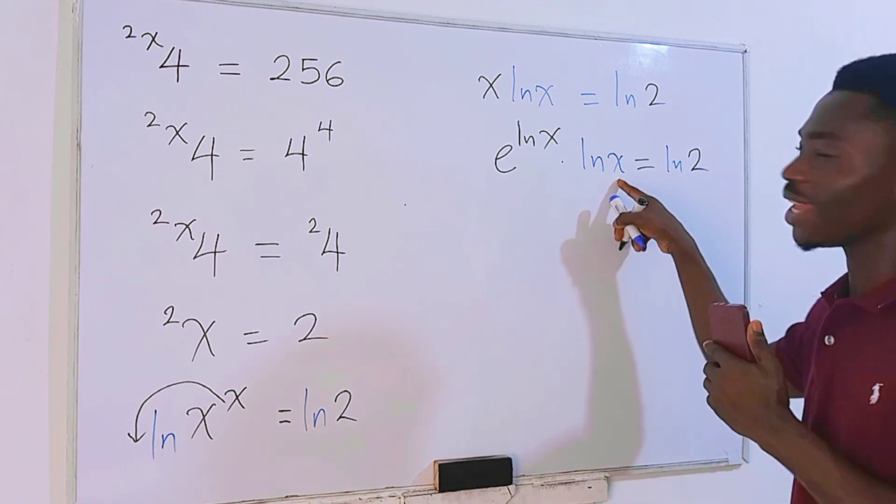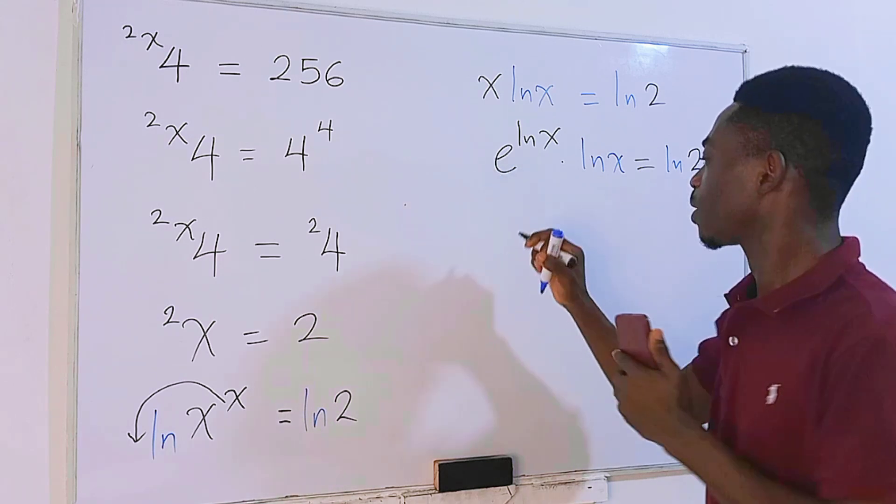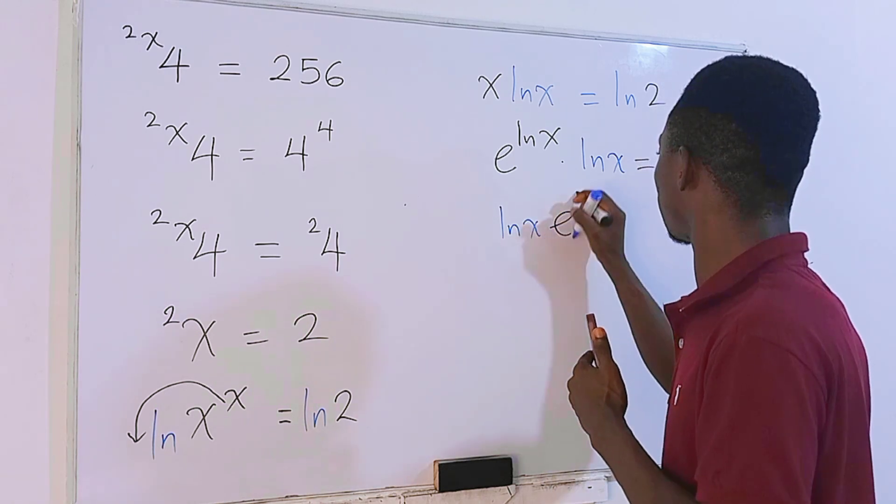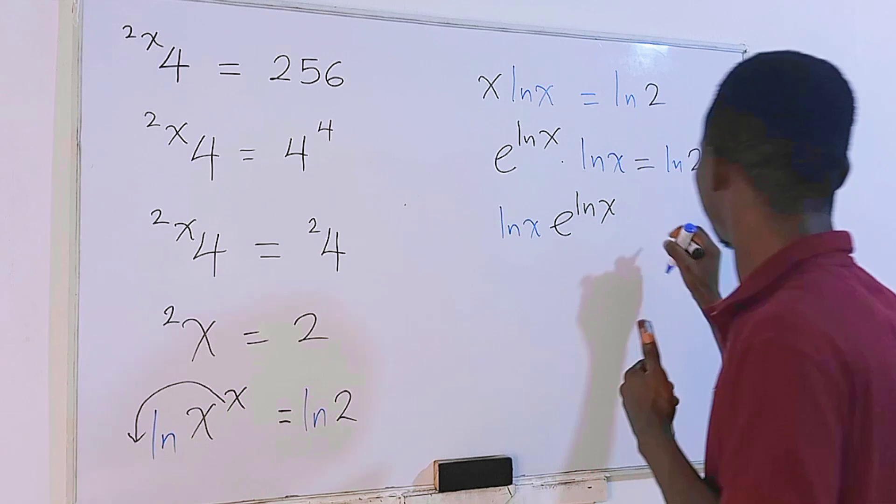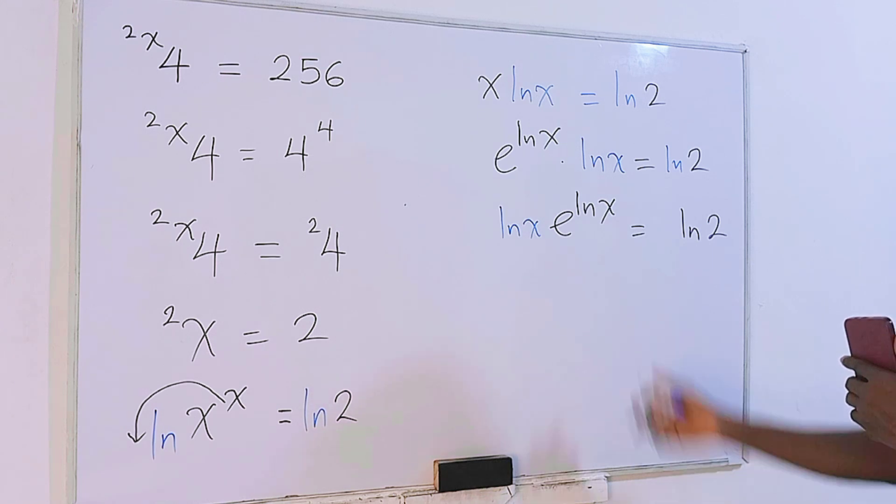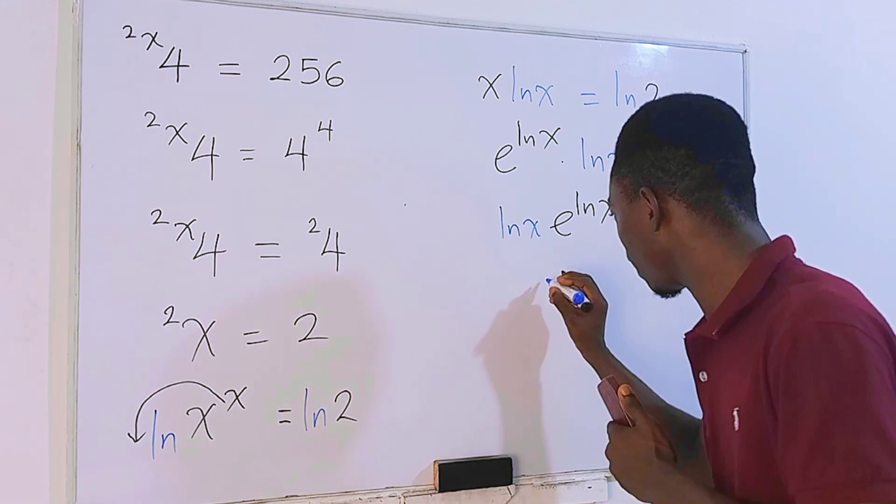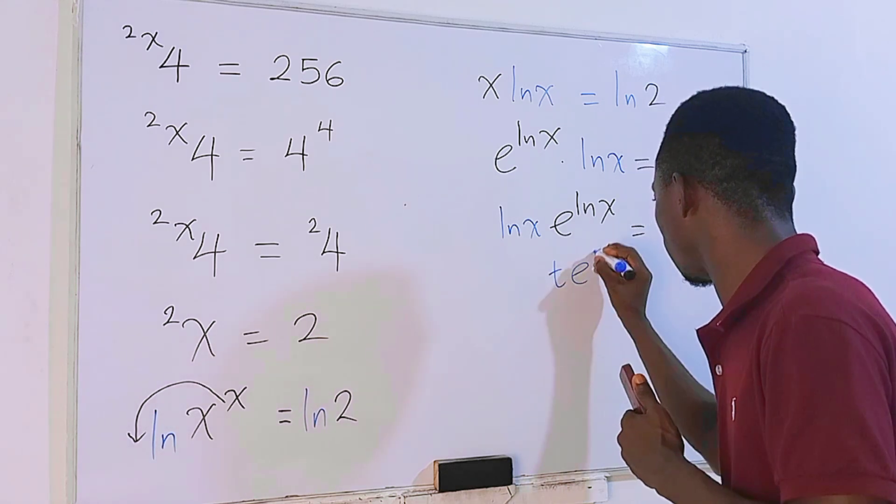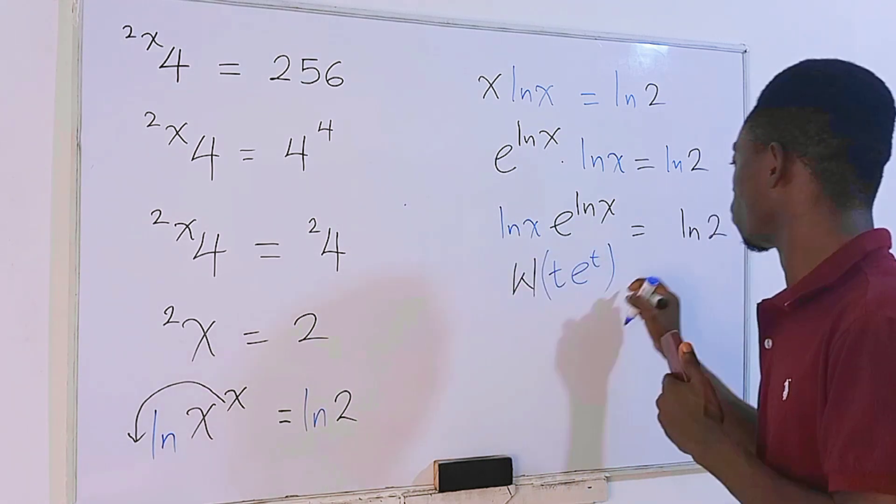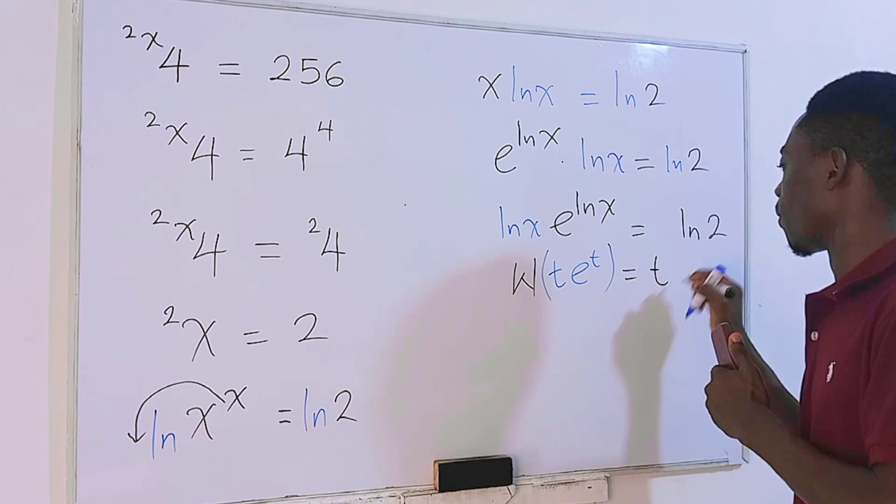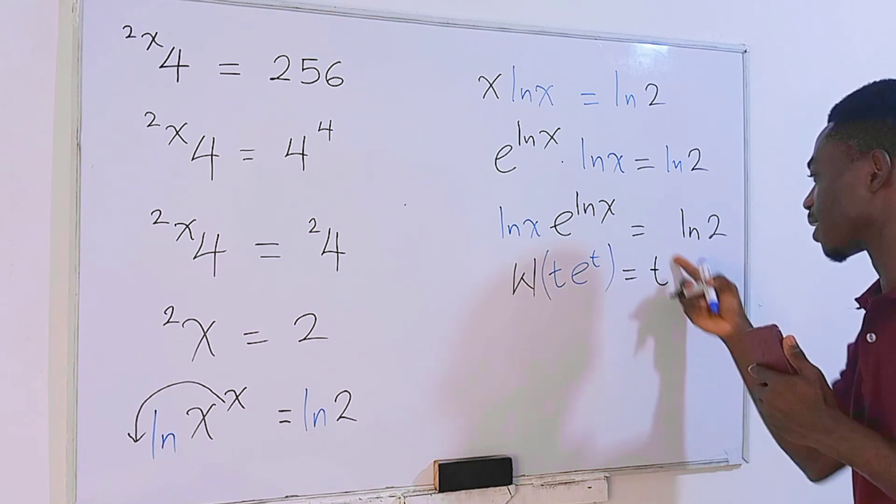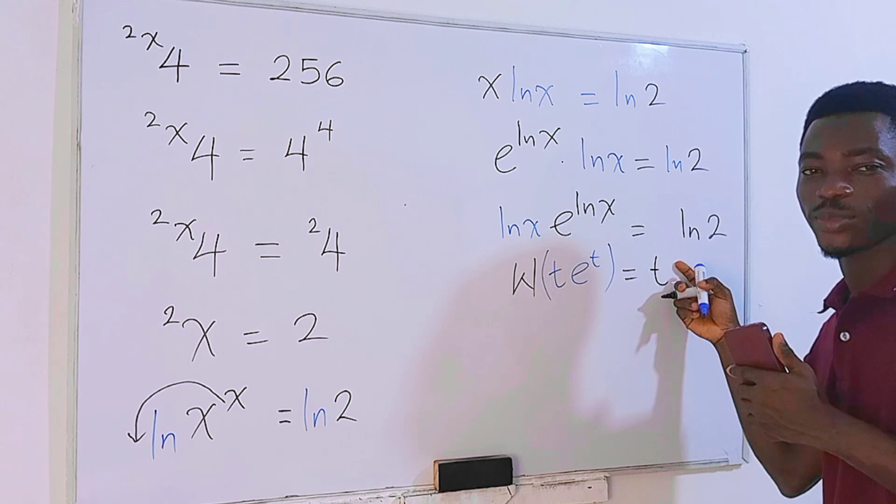Now permit me to bring this ln of x to the front right here. I will explain to you later. We have ln of x times e to the power ln of x, and this equals ln of 2. Now check this. Whenever we have any input such as t times e to the power t, if we take Lambert W function on this input right here, we are still going to get our t back.